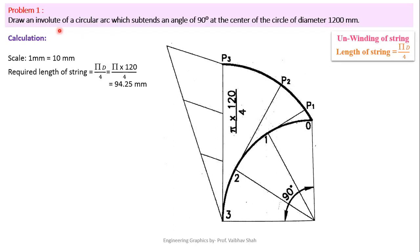Here we have to draw the involute of a circular arc, so we must know what is meant by arc. An arc is the smallest portion of a circle — any random or smallest portion of the circle is known as an arc. If it completely covers 360 degrees, it is known as a circle; but if you draw any arc other than 360 degrees, it is known as a circular arc.